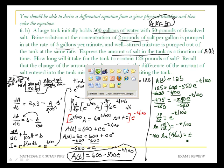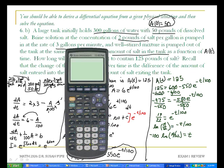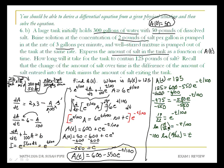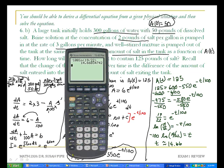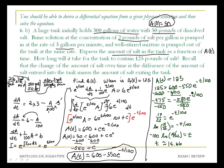I can type this into my calculator. Negative 100 natural log of 19 divided by 22 gives me 14.66. T is approximately 14.66 minutes. After 14.66 minutes, there will be 125 pounds of salt in the tank.